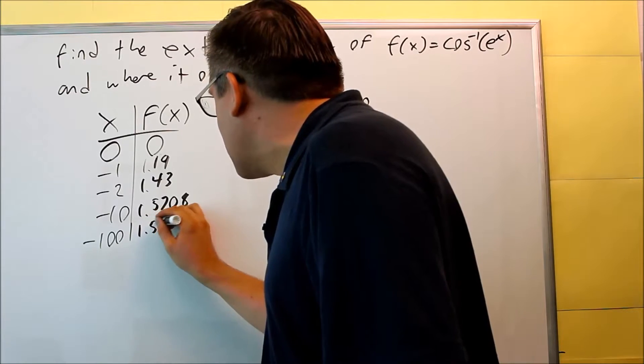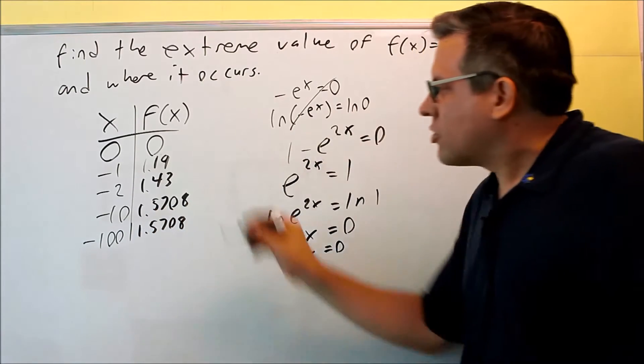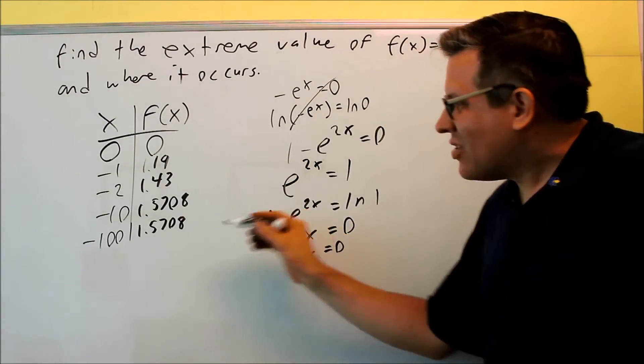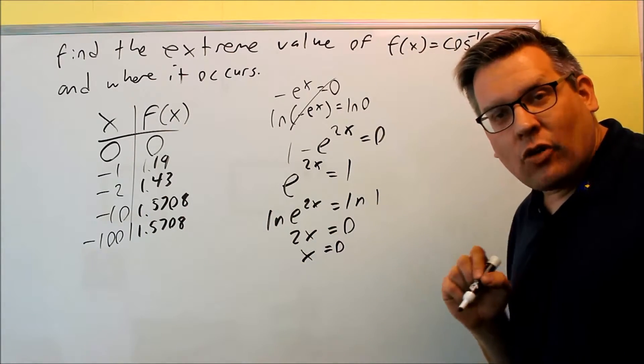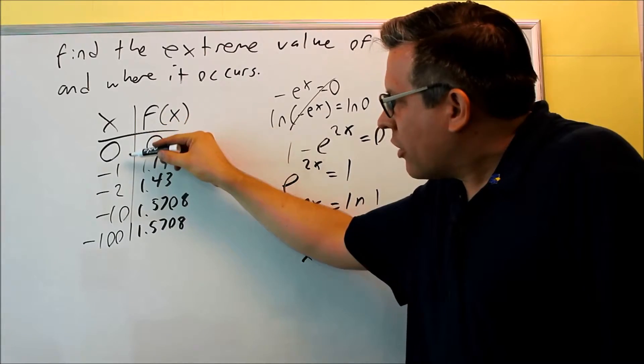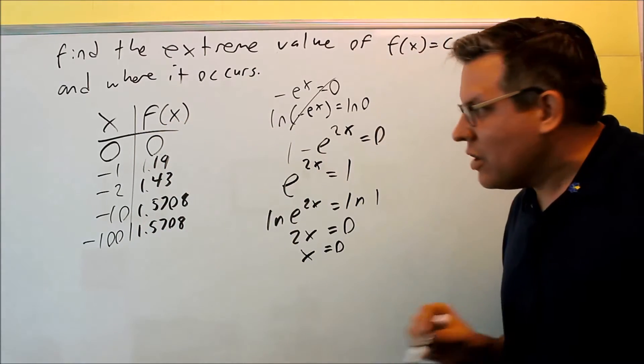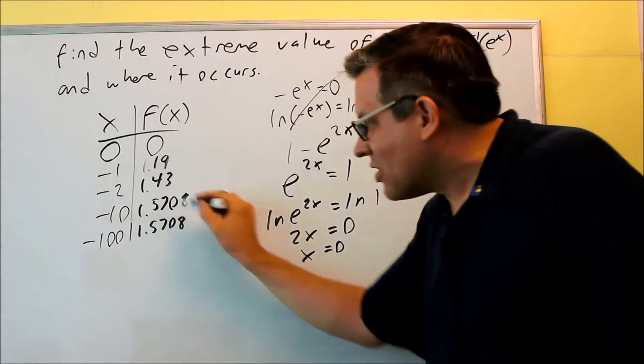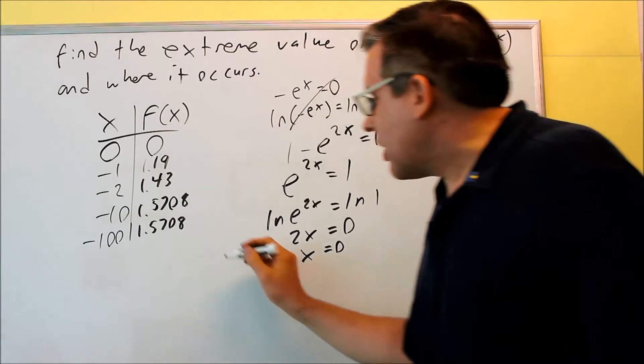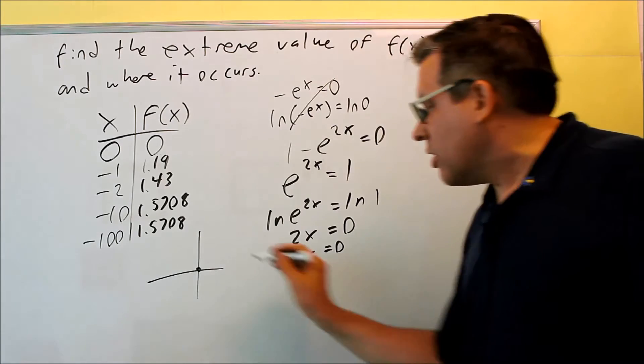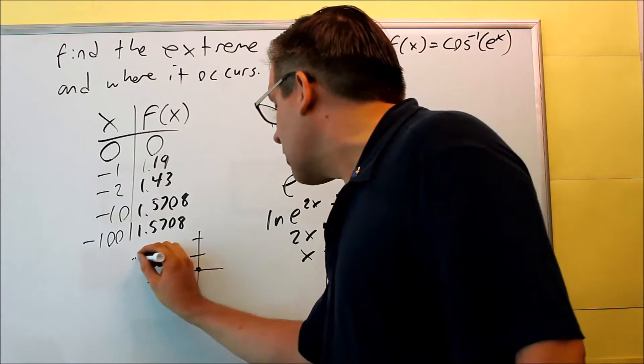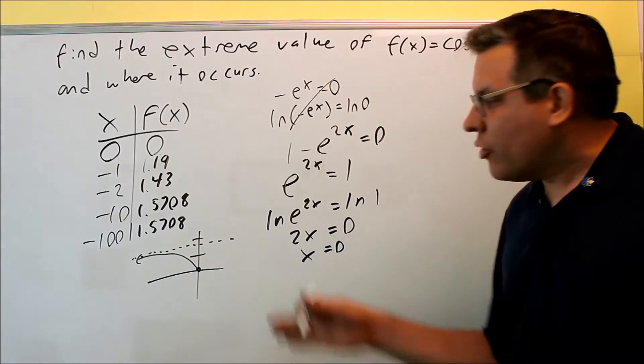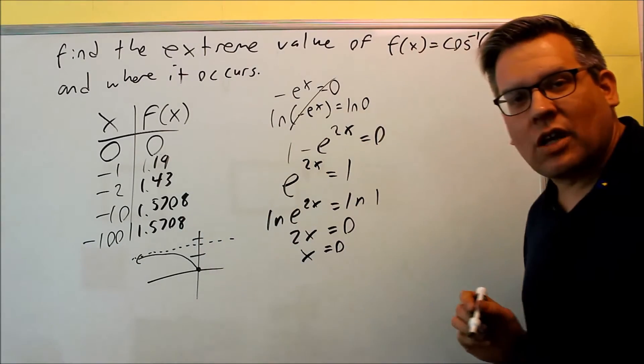And in fact, even 100 to 4 places, we actually get the same number. So I'm purposely putting this in to see what the graph is doing. What's actually happening here is this is going to have a horizontal asymptote. Now how we know that is because as we put in other numbers, as it gets closer and closer to negative infinity, these numbers are getting closer and closer to 1.57. To be exact, this is actually pi over 2. So what's going to happen here is the graph itself starts at 0, 0, and then it ends up having some kind of a horizontal asymptote at 1.57. And the table actually tells us that that's happening.